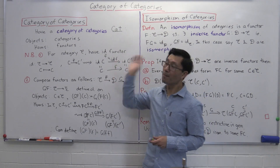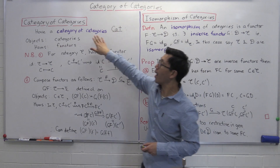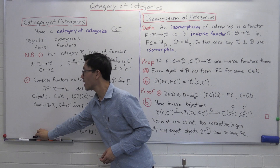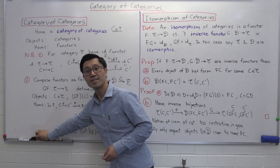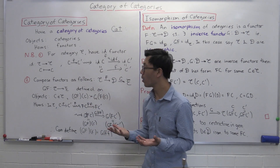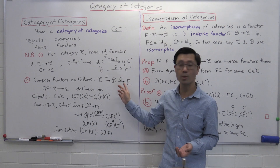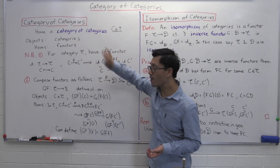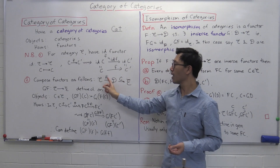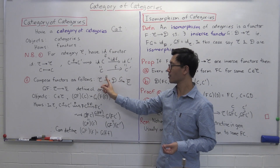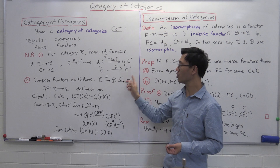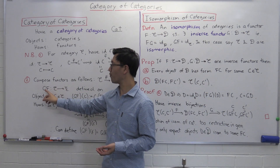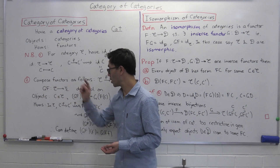The other piece of data you need to describe a category is the composition of Homs. How do we compose? In this case, the Homs are functors, so how do we compose functors? Suppose we're given two functors — and I should state these are covariant functors — say F from C to D, and G from D to E. We want to look at a new functor GF which goes from C to E.